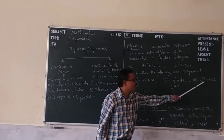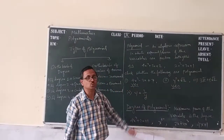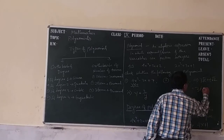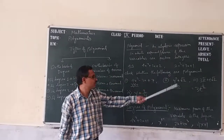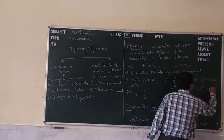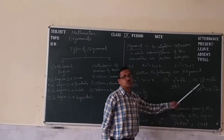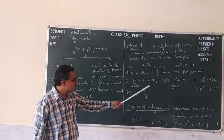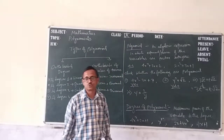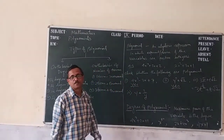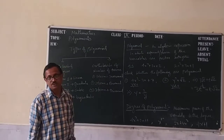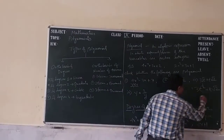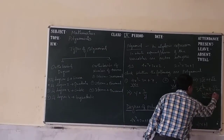Next question: 3 root T plus 2 root T. Here T is the variable. This will be like 3T to the power half. Root over T means power is half. So T to the power half — it is not an integer, it is a fractional number. Power of T is half, so it is not a polynomial, because the power is not a positive integer — the power is a fractional number.